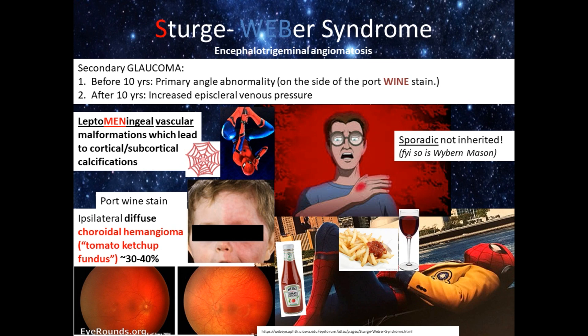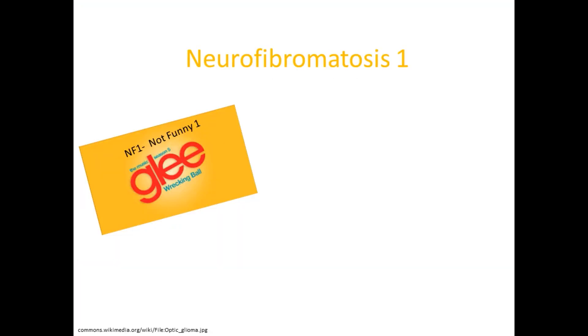Sturge-Weber is also associated with diffuse choroidal hemangioma — not isolated — also known as a tomato ketchup or ketchup-red fundus. Just imagine him eating fries with ketchup. The fundus photo shows a right eye fundus that appears redder and pinker compared to the normal left eye, typical of a diffuse choroidal hemangioma. That's it for Sturge-Weber.